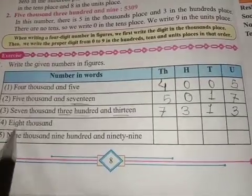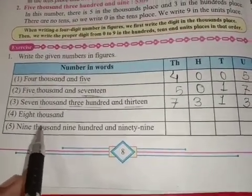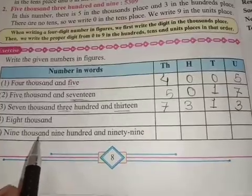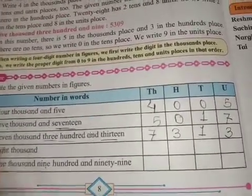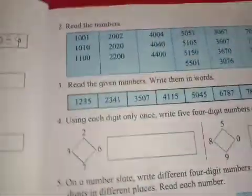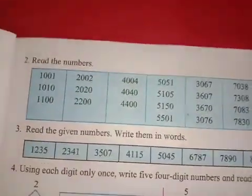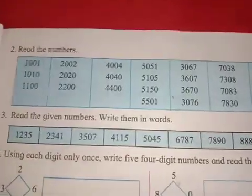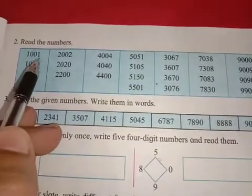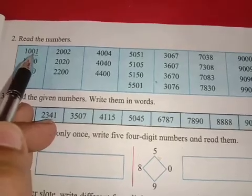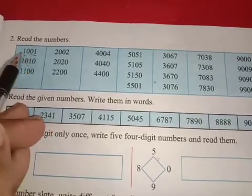Two examples are homework for you — complete them and send on our WhatsApp group. Now let's look at the next point: reading numbers. We will be reading these numbers. It has four digits, meaning unit place, tens place, hundreds place, and thousands place.